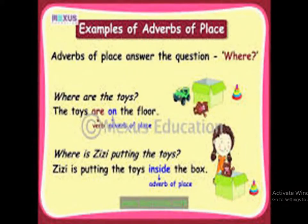The second type is adverbs of place. Place means where. The adverbs which answer the question 'where' are adverbs of place. For example: where are the toys? The toys are on the floor — 'on' is the adverb of place. Where is Zizi putting the toys? Zizi is putting the toys inside the box — inside is the adverb of place. Another example: don't go outside. Outside again is a place, so outside is the adverb of place.